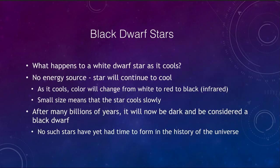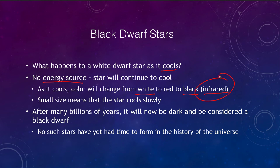What will happen to a white dwarf over time? It is going to remain stable forever — the only thing that can change is that it is slowly going to cool off, because it has no energy source. It will start off looking a bluish-white color and that will slowly fade to yellowish, to orange, to red, and finally to black, meaning it is now emitting most of its light in the infrared portion of the spectrum. Because it is so small it will cool very slowly, taking many billions of years, and it will then be considered a black dwarf star.